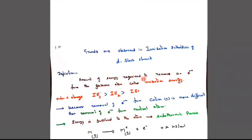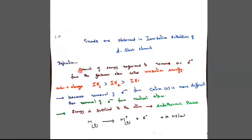Let us see the next two topics. Trends observed in ionization enthalpy of d-block elements. Trend means variations can be seen in ionization energy. What is ionization energy?